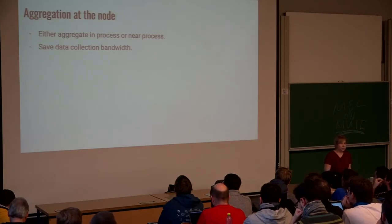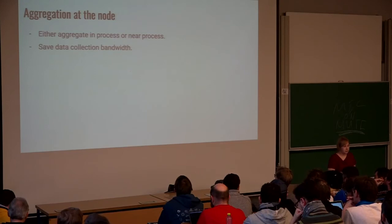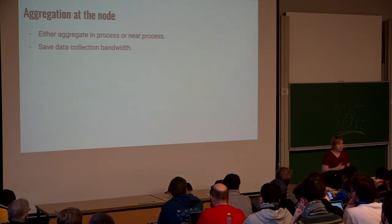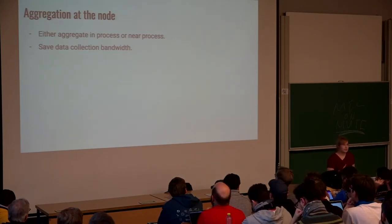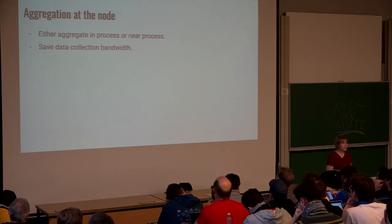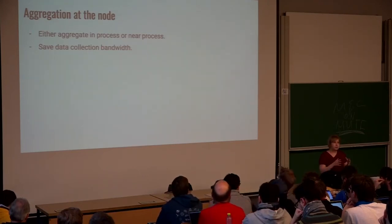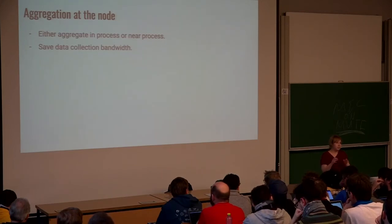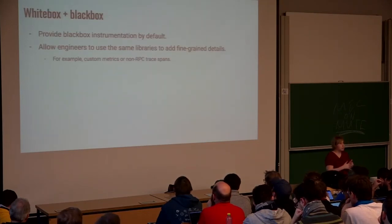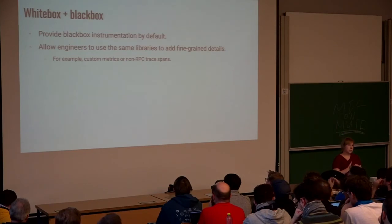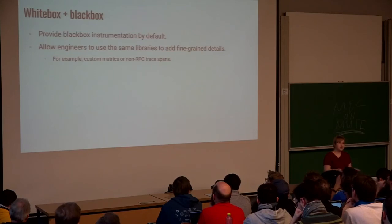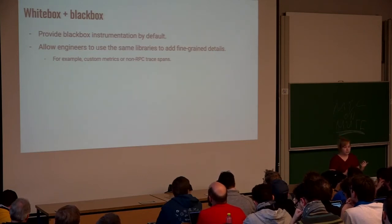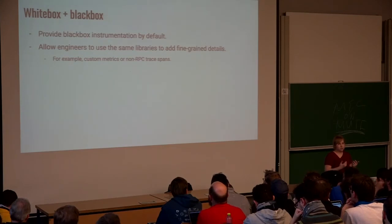So I was repeating that the data size could be a reason why we aggregate or sample data. One of the obvious other reasons is we want to be able to limit the outbound bandwidth that is spent on data collection. For signals that are aggregatable like metrics, we try to aggregate them in process or near process to reduce the bandwidth. We are either aggregating them in process or by an agent that is living very close to the process and do the aggregation there. At Google, we try to use same instrumentation libraries everywhere to provide, when we're providing black box monitoring, we're trying to use the same libraries for compatibility.